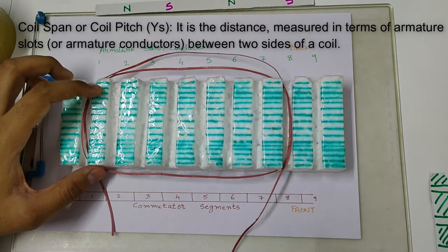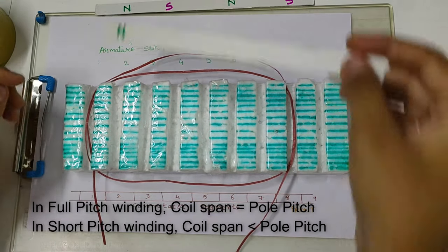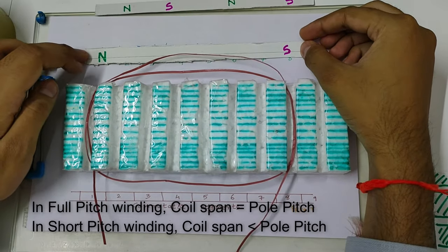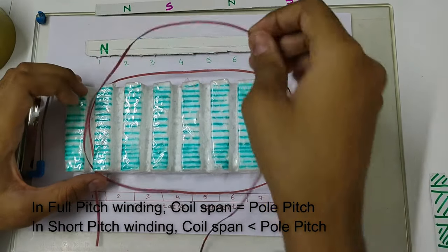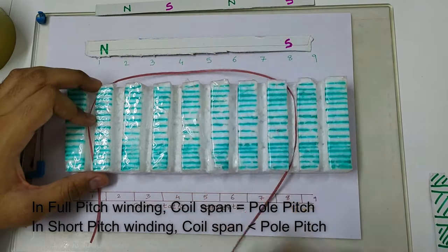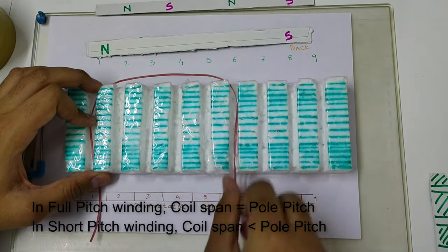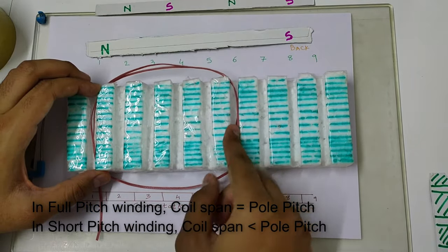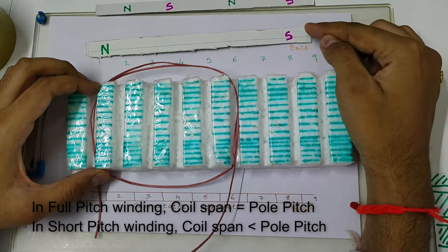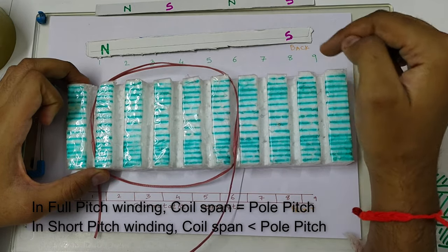Now, if coil span is equal to pole pitch, then this type of winding is called a full pitched winding. And if coil span is less than pole pitch — say for example if pole pitch is 8, but my winding starts from 1 but ends at 6, then the other side of the winding is not reaching the south pole. In such a case, this winding is called a short pitched winding.